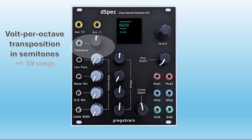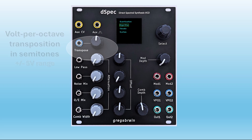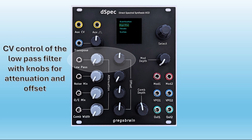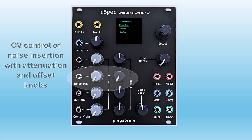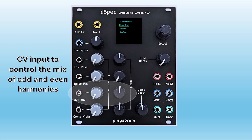A third volt per octave input supports transposition in semitones up or down. There's a low-pass filter with CV control and an option to insert two kinds of noise, again under CV control. Another CV input provides control over the mix of the odd and even harmonics.